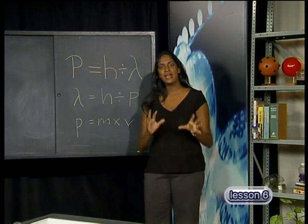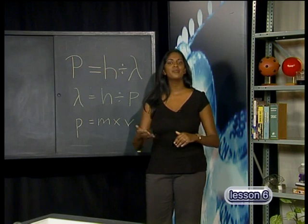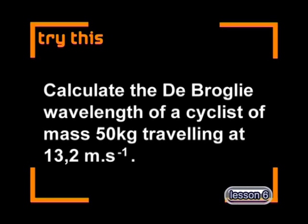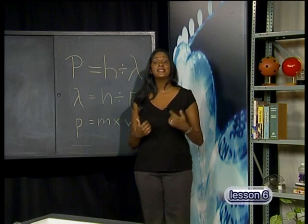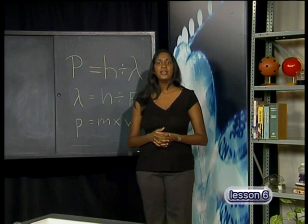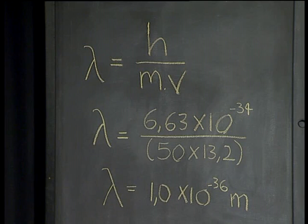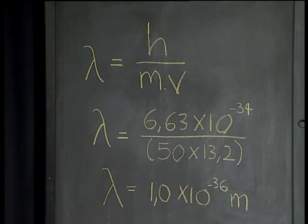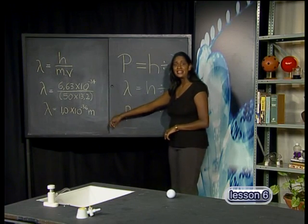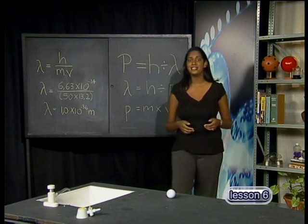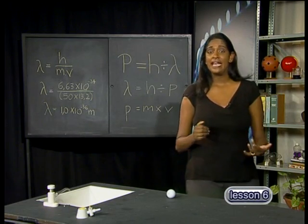Now that we have a basic understanding of the theory, let's see how this works in practice. Calculate the de Broglie wavelength of a cyclist of mass 50 kilograms traveling at 13.2 meters per second. Using de Broglie's equation and substituting in the values, we get the wavelength is equal to 6.63 × 10⁻³⁴ divided by 50 times 13.2. This gives us a wavelength of 1.0 × 10⁻³⁶ meters. This is an incredibly small value and, if indeed the cyclist has a wave nature, it would be too small to measure.